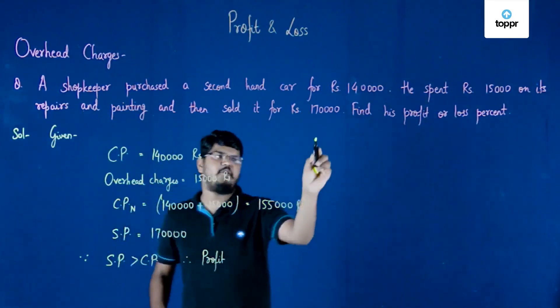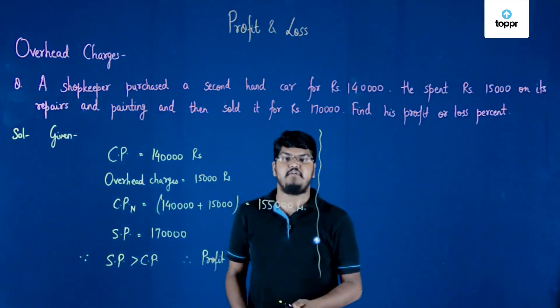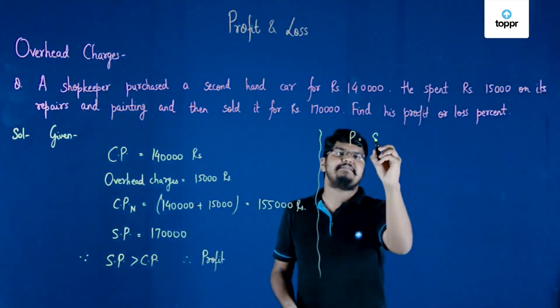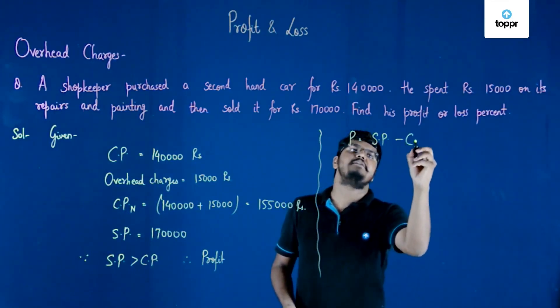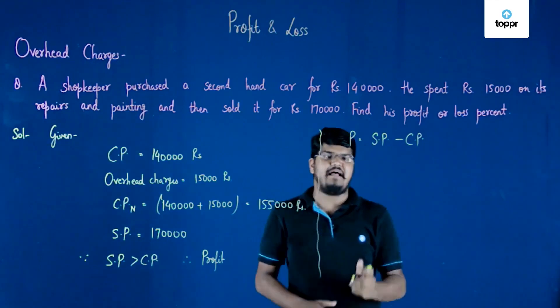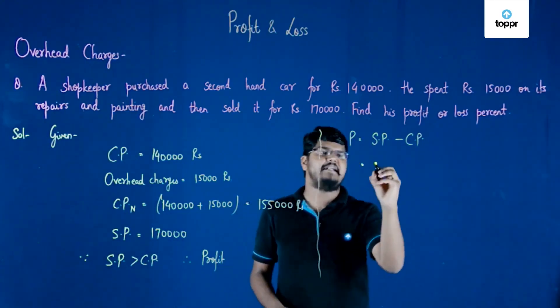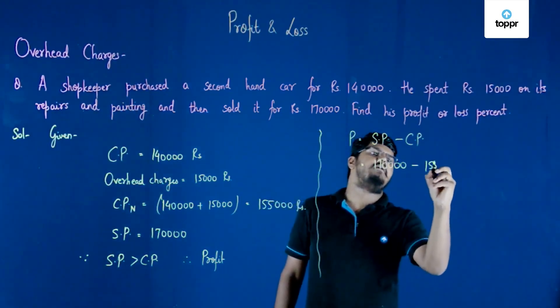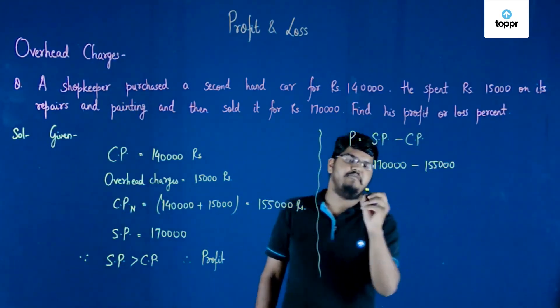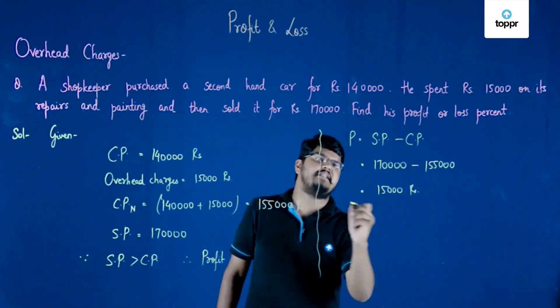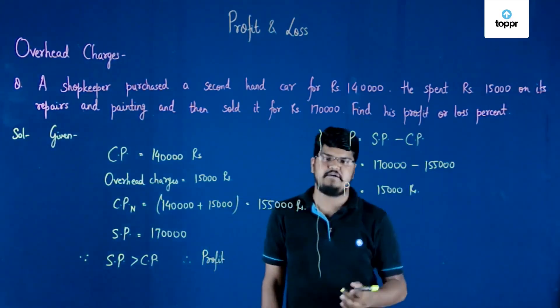Since it is the case of profit, we can find out the value of this profit by calculating it as selling price minus cost price. When we substitute the values, we'll get 1 lakh 70,000 minus 1 lakh 55,000, which gives us 15,000 rupees. Thus the profit is 15,000 rupees.